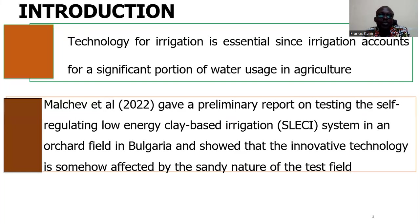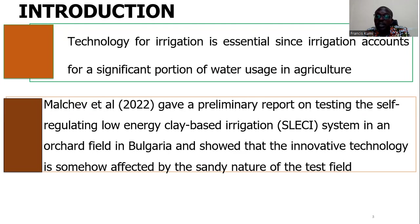That is the principle behind the whole clay-based irrigation system. Marshal et al. tested this technology in Bulgaria and realized that it is dependent on the nature of the soil — the type of soil affected performance in the field.